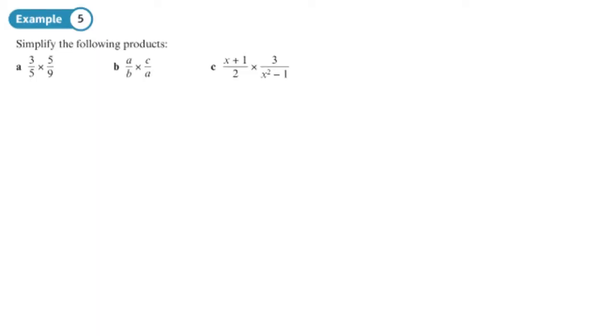Okay, so let's have a look at these. In the first one, 3 over 5 times 5 over 9, straight away I'm going to look to see if I can cross-cancel. So divide both of those by 3, divide both of those by 5. You end up with a much easier question. 1 times 1 over 1 times 3. It means you don't have to cancel down at the end.